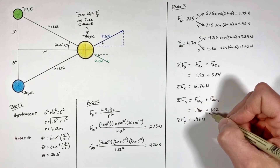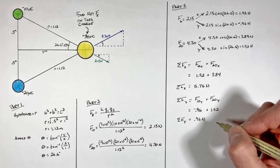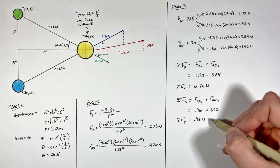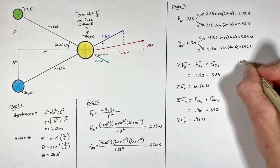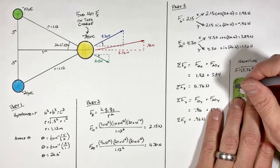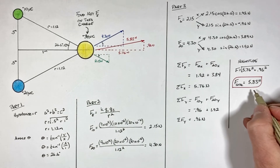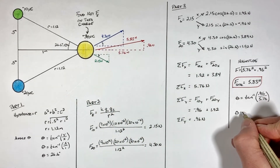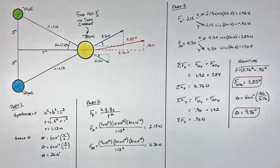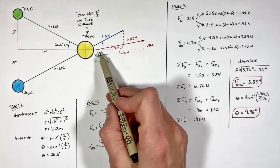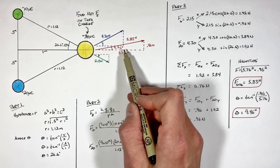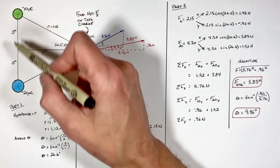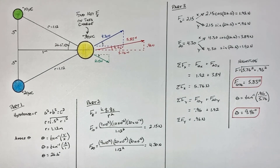Now that we know the two components of the resultant force, we can solve for the total magnitude and direction. Combining them using the Pythagorean theorem, we find the total force is 5.83 newtons. Then using the inverse tangent function we find the resultant force is acting 9.46 degrees above the horizontal axis. This is how you solve for the net force acting on a charge as a result of two other charges.